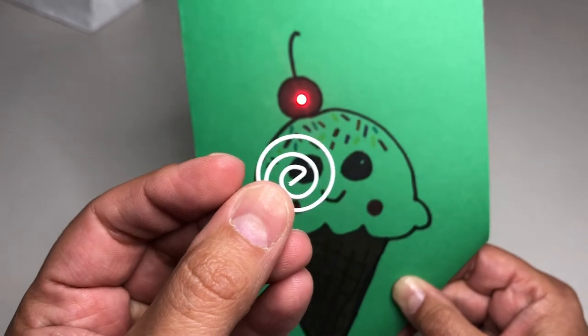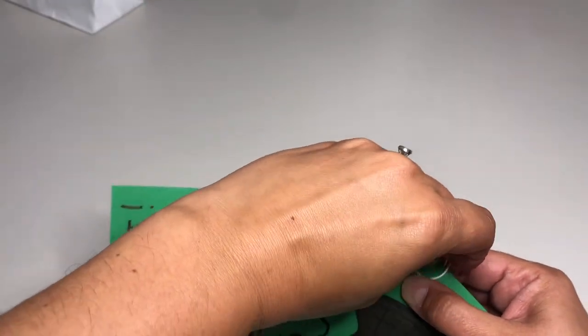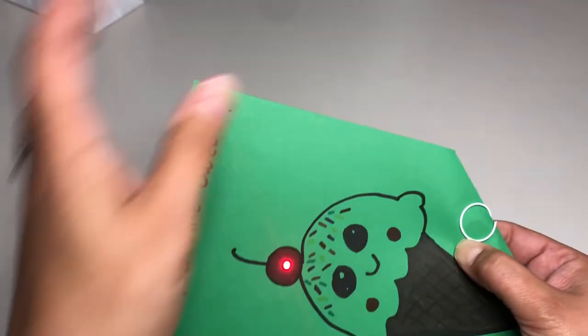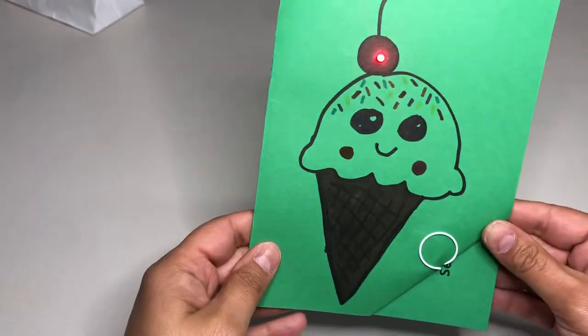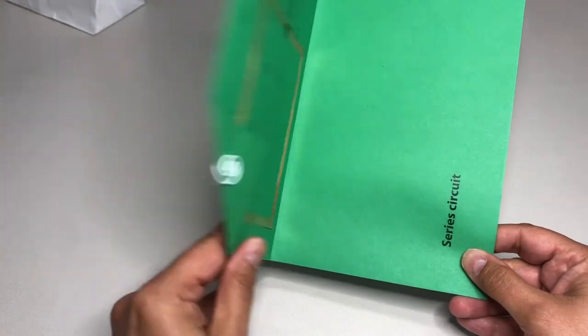Now you notice I have to hold it for the circuit to be completed and the electricity to go around from the battery to light up the light. This is where my circular paper clip is going to come in. I can place it over top of the battery and then I don't need to hold it anymore.